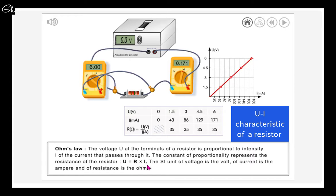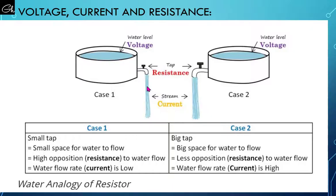As you can see, in case number one the flow rate of water is low while it's higher in case number two. So the resistance used in case number one is higher than case number two.